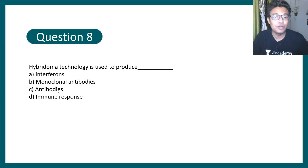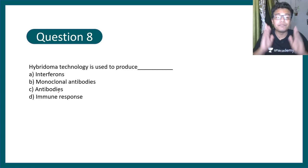Question number 8: hybridoma technology is used to produce interferon, monoclonal antibodies, antibiotics, or immune response. Let me tell you hybridoma technique is very very important for any examination purposes and it is dedicated to prepare monoclonal antibodies. If you want to learn more about hybridoma technique, you know where to go.